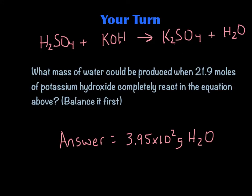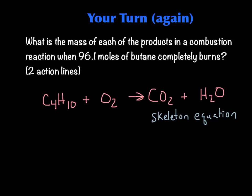Now it's your turn to try it out. I've given you a skeleton equation of an acid-base reaction between sulfuric acid and potassium hydroxide. I've also given you 21.9 moles of KOH, and I want to find out how many grams of water you're going to make. You have to balance this first and then do the proper action line. You should end up with 3.95 times 10 to the second. Your calculator may say 394.638 — I've just put it in the correct scientific notation and correct number of sig figs. There's another problem to do after this one, so pause it now, get done, then do the next one.